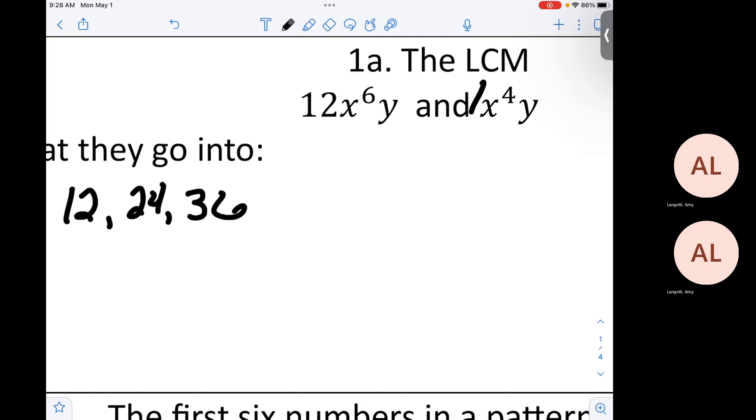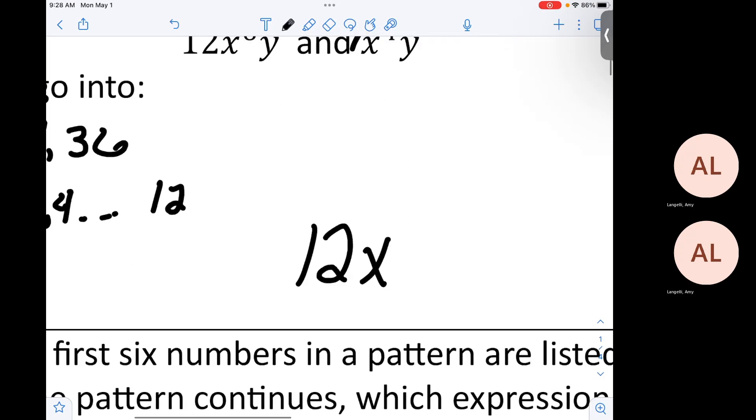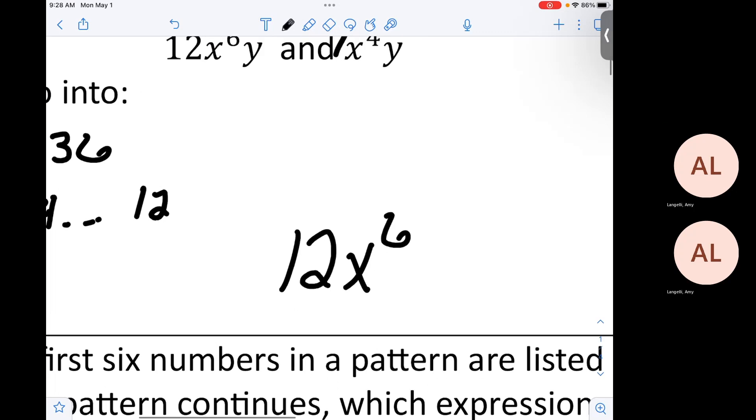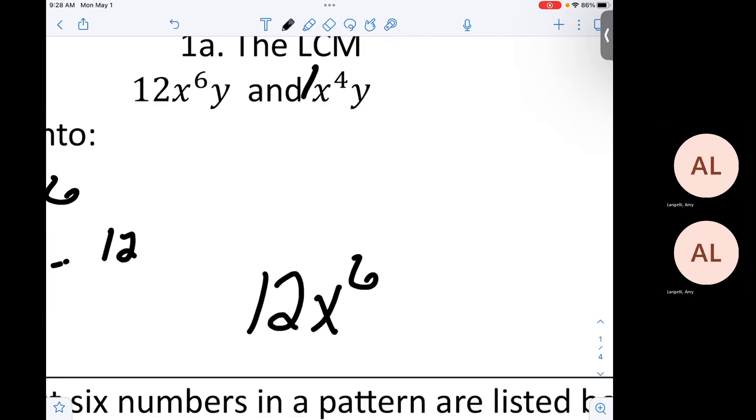And then there's just a 1 there. The multiples are 1, 2, 3, 4. So the first time that would overlap is at a 12. Now, do you guys remember x6 or x4? X6. And y or y. Yeah.